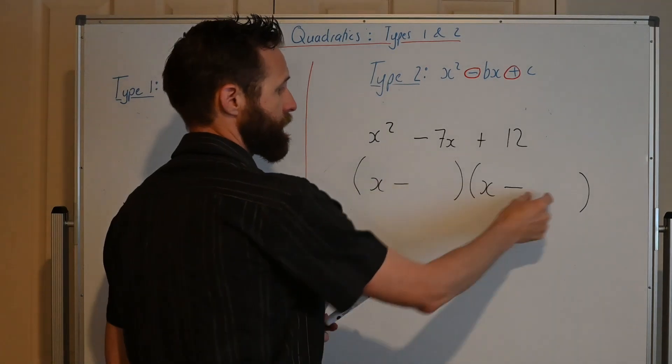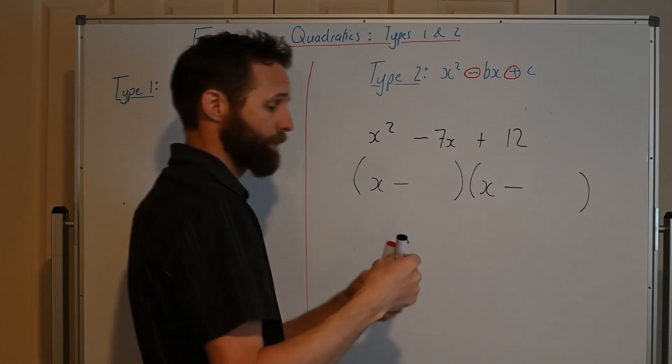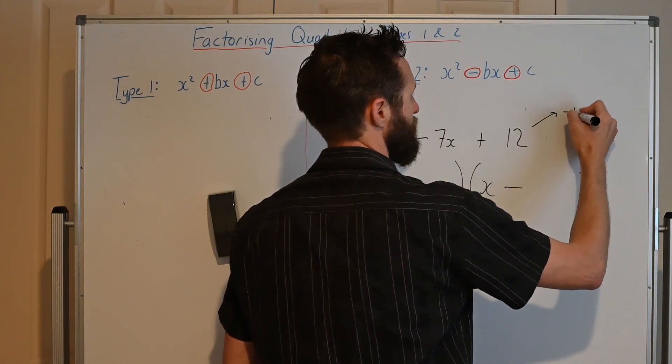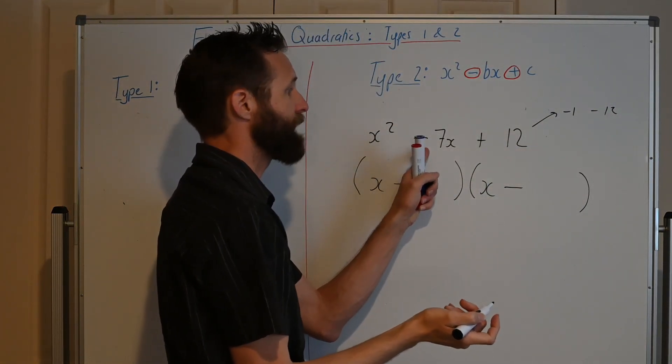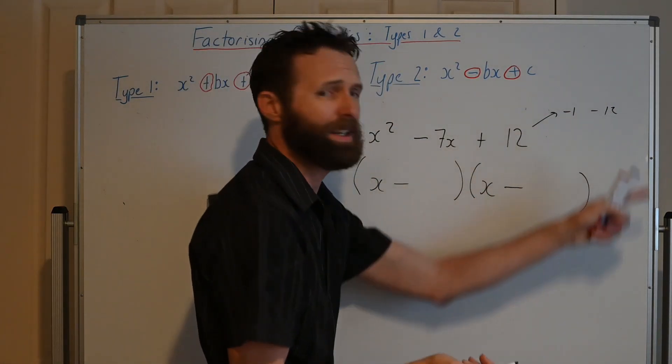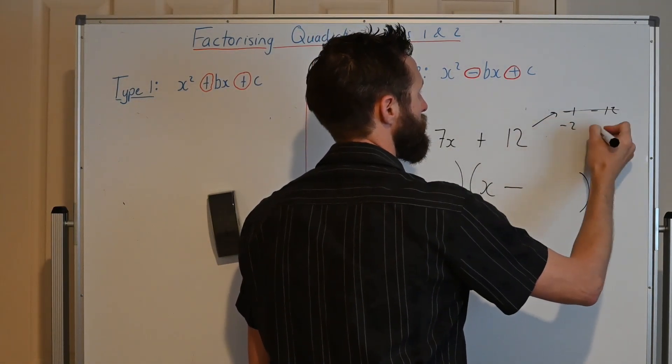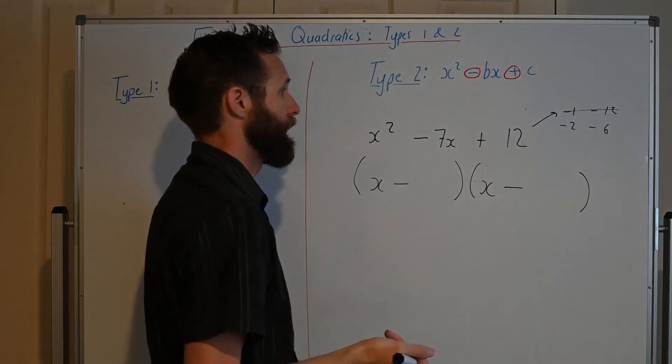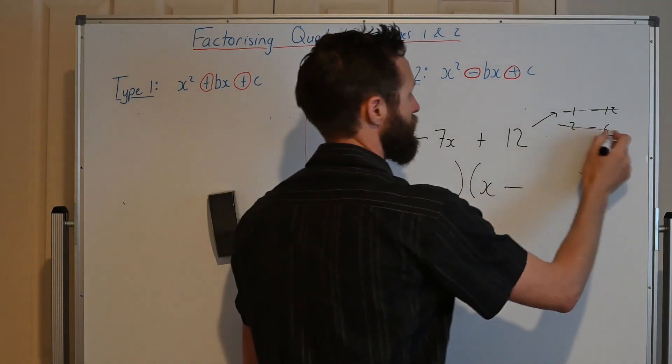And we know that these two here must multiply to make positive 12. So we think of our factors of positive 12, and they've both got to be minuses, so we could have minus 1, minus 12. But I immediately know that that's not going to work because I need them to add to minus 7. And minus 1 plus minus 12 is actually minus 13, so we can ignore that one. The next one, minus 2 minus 6, that multiplies to make 12, doesn't it? But they add to minus 8, so that's not going to work.